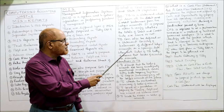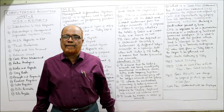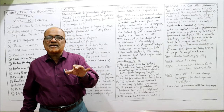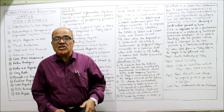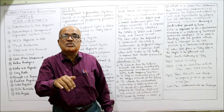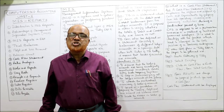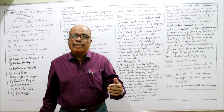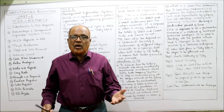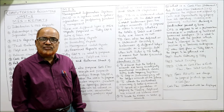The trial balance is an acid test that accounts are accurate, but it is not conclusive proof that there are no errors. Its limitation is that even when total debits equal total credits, some errors may still exist and not be disclosed — such as errors of omission, errors of commission, and errors of principle. These types of errors are not disclosed by the trial balance. However, when the trial balance agrees, we can say the books are mathematically correct.